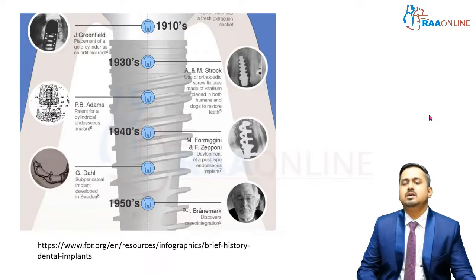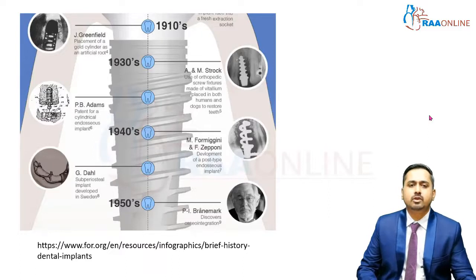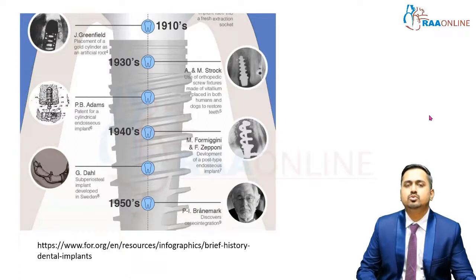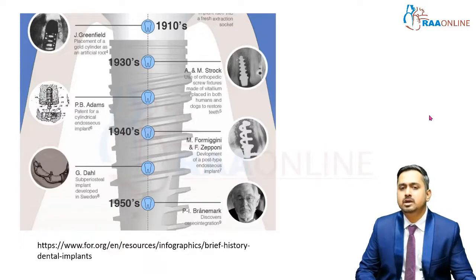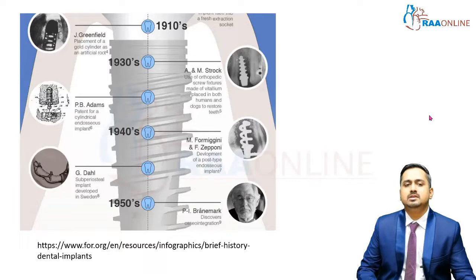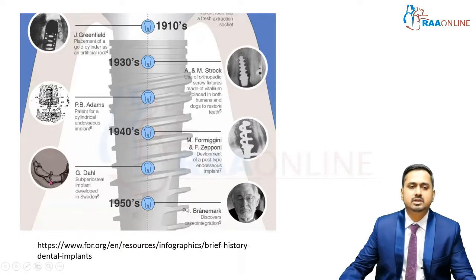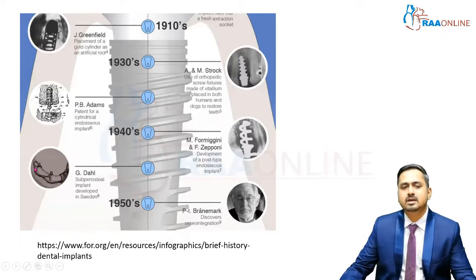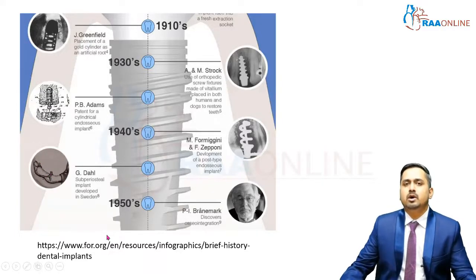These screws were usually made of vitallium but had their own side effects. Then P.E.B. Adams in 1940 introduced the cylindrical endosseous implant — endosseous meaning placed within the bone, just like a natural tooth root. In the 1940s, Formigini and Zeponi started using a post-type endosseous implant, and Dahl introduced the subperiosteal implant. Subperiosteal means it is under the periosteal layer of the bone but not inside the bone. As seen in the image, this metal framework sits below the soft tissue and periosteal layer, placed in close contact on the bone surface, with abutments providing support and retention for intraoral prostheses.